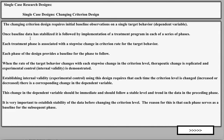Once the baseline data has been established, the design is followed by the implementation of a treatment — the independent variable — across a series of phases. Each treatment phase is associated with a stepwise change in the criterion rate for the target behavior.